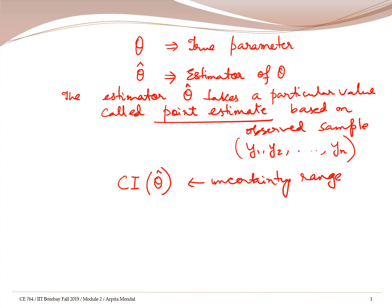If we keep on repeating the experiment over different samples, then it is possible to define what is called a sampling distribution for the estimator theta hat. So theta hat has sampling variability characterized by the sampling distribution of theta hat.